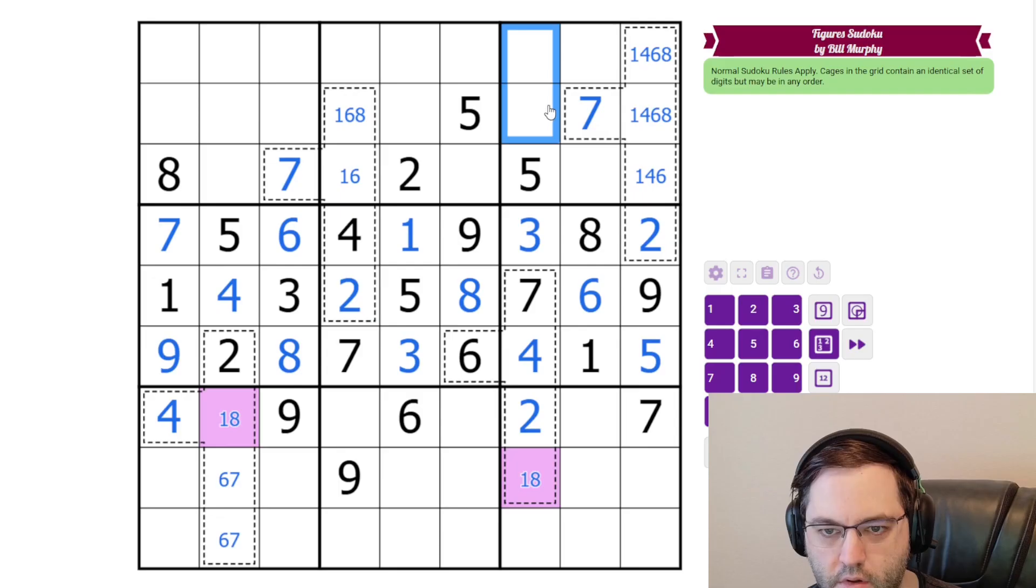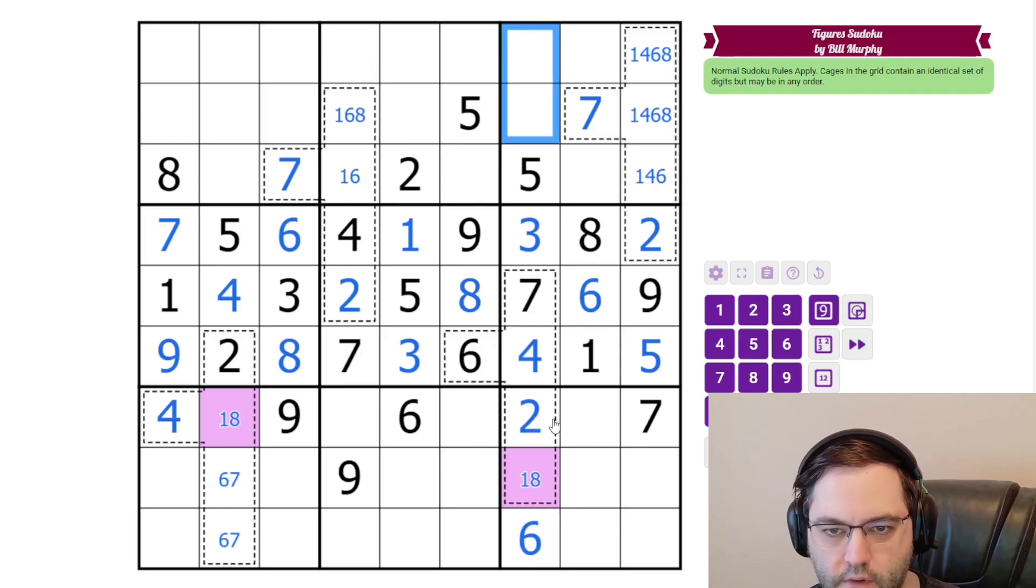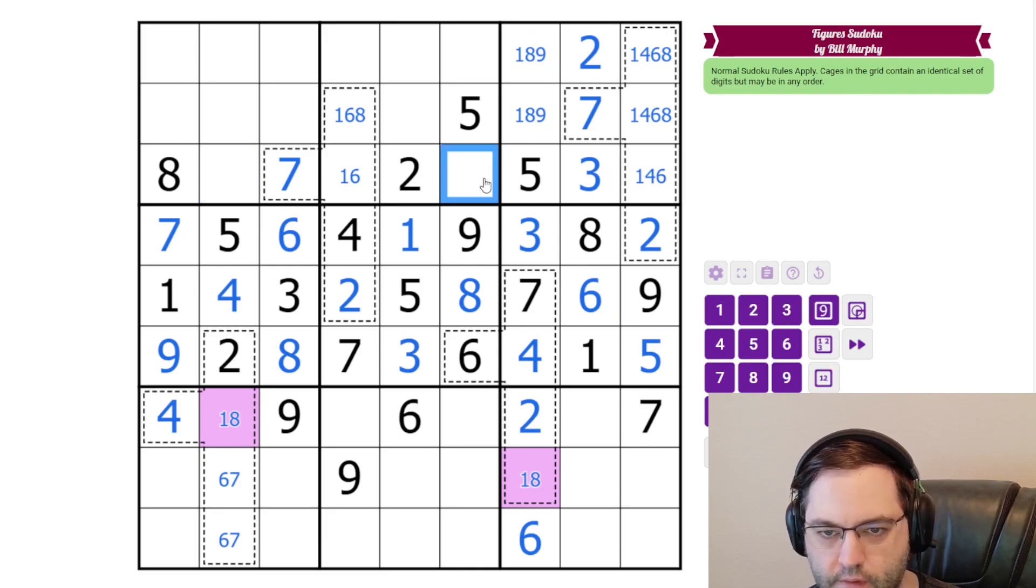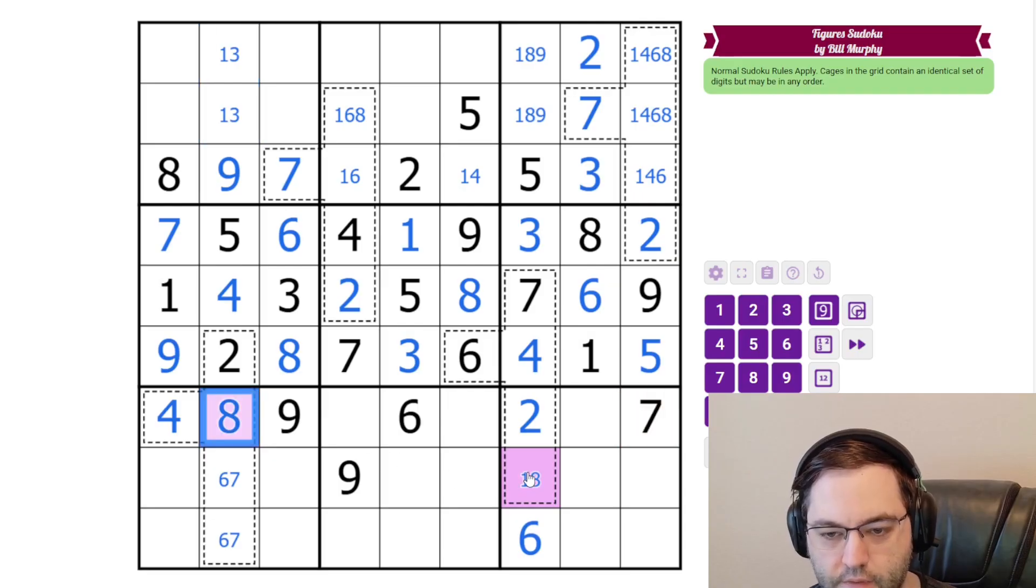So in this column, we still need a six, but it's six isn't one of these. So it's not here. So this is six. These are one, eight, nine. And that's going to leave two and three to go in these cells. These are one, four, six, and nine. The nine can't go here. So it must go here. This is one or four. These are one, three, eight, and not eight. There's an eight here. So that's going to make eight the mystery digit.